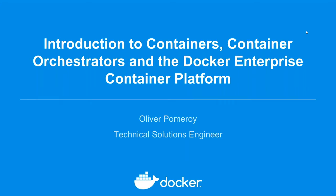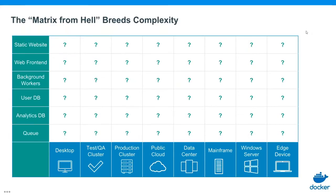We'll start off by looking at the application landscape that most enterprises today are facing. That landscape is starting to become really the matrix from hell. The amount of applications that enterprises are being asked to deploy is growing. We know software is eating the world — more and more applications are being developed and deployed inside of enterprises. If you looked at this as a graph, on the vertical axis, the types of applications people are deploying are growing upwards.